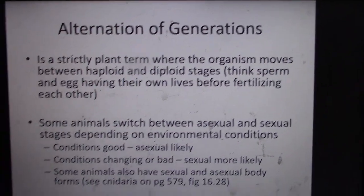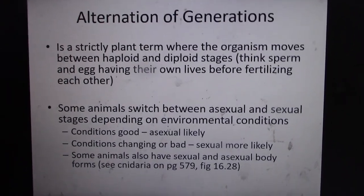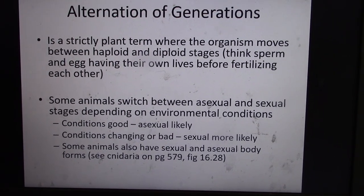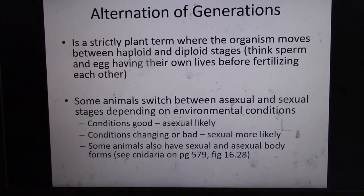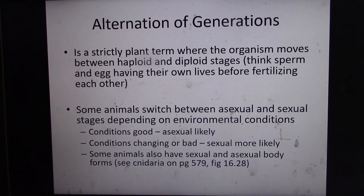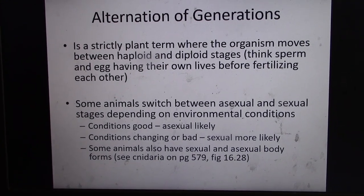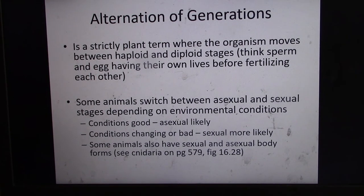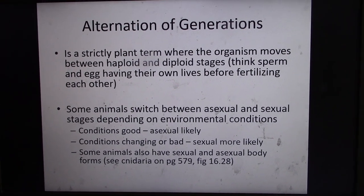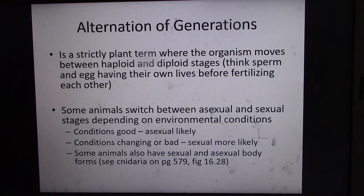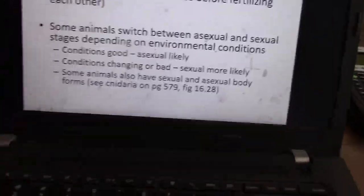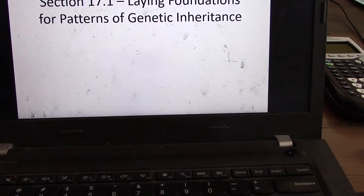Alternation of generations is not strictly a plant term, it's mostly a plant term. Plants and planktonic organisms. So these could be invertebrates and/or algae in the ocean. And some animals will switch between asexual and sexual stages. That's the last slide for this section of the unit.